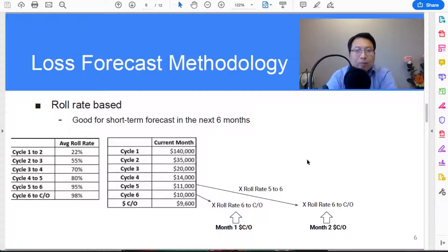In collections module we talk about the roll rates. On the left hand side we have a table to give us the average roll rate for this portfolio, let's say in the past six months.